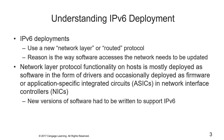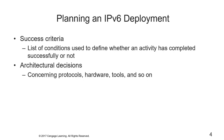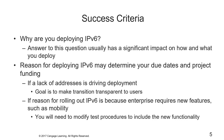When planning an IPv6 deployment, two key factors are success criteria — a list of conditions used to define whether an activity or task was completed successfully — and architectural decisions, where we look at protocol, hardware, tools, and so on.